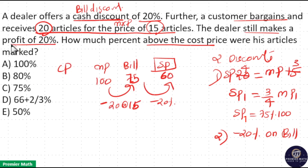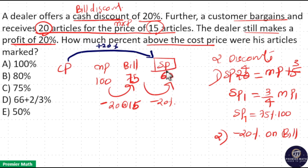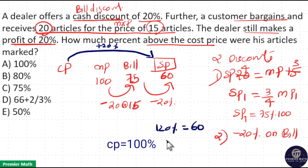Even after these two discounts, the dealer still makes a profit of 20 percentage. A profit of 20 percentage means 120 percentage is the selling price when cost price is 100 percentage. So 120 percentage equals 60 rupees, meaning cost price equals 5/6 of 60, which is 50 rupees. So the cost price is 50 rupees.